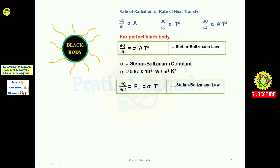This term becomes the emissive power of the black body. So dQ/dt divided by A equals E_b, which is the emissive power of the black body, equal to sigma into T raised to 4. This is also called the Stefan-Boltzmann law. The emissive power of the black body equals the Stefan-Boltzmann constant times the fourth power of temperature.